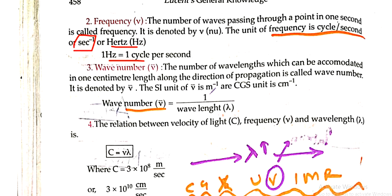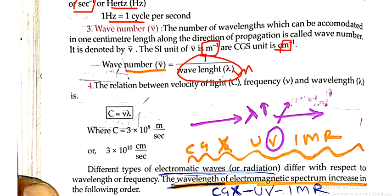The wave number is inversely proportional to the wavelength. SI unit is m raised to power minus 1 and CGS unit is cm minus 1.